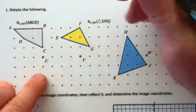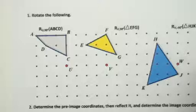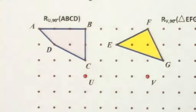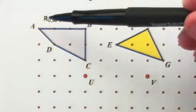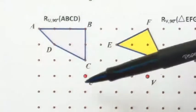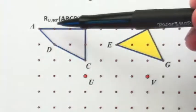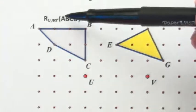First of all, let's just recap what notation means, because notation is a big part of this. This would say rotate about point U, this point here, 90 degrees, the quadrilateral ABCD.